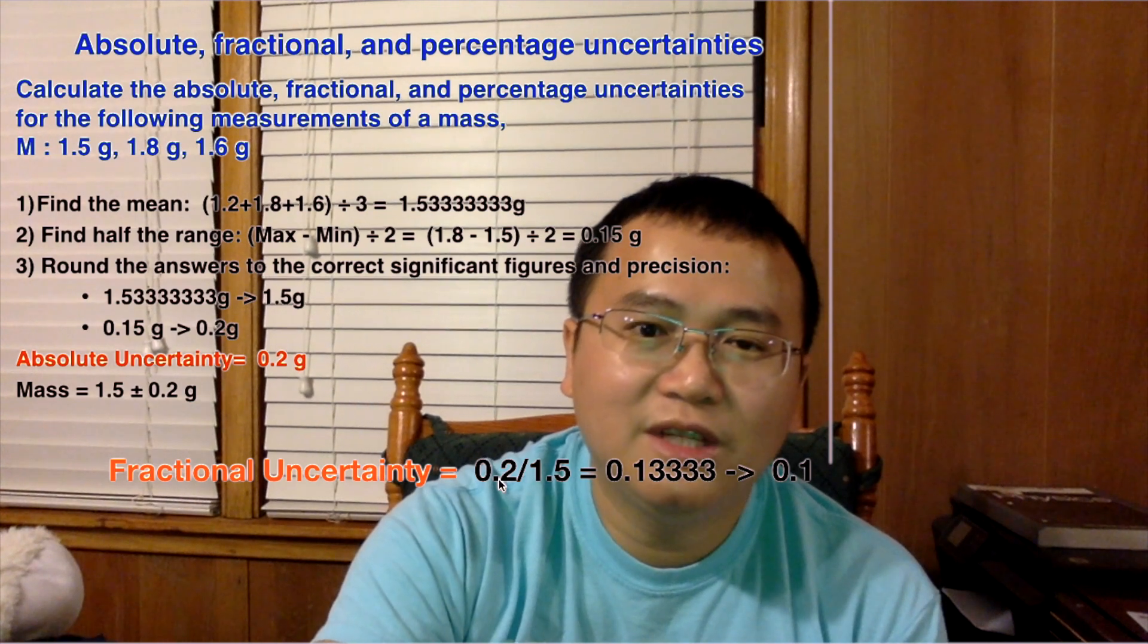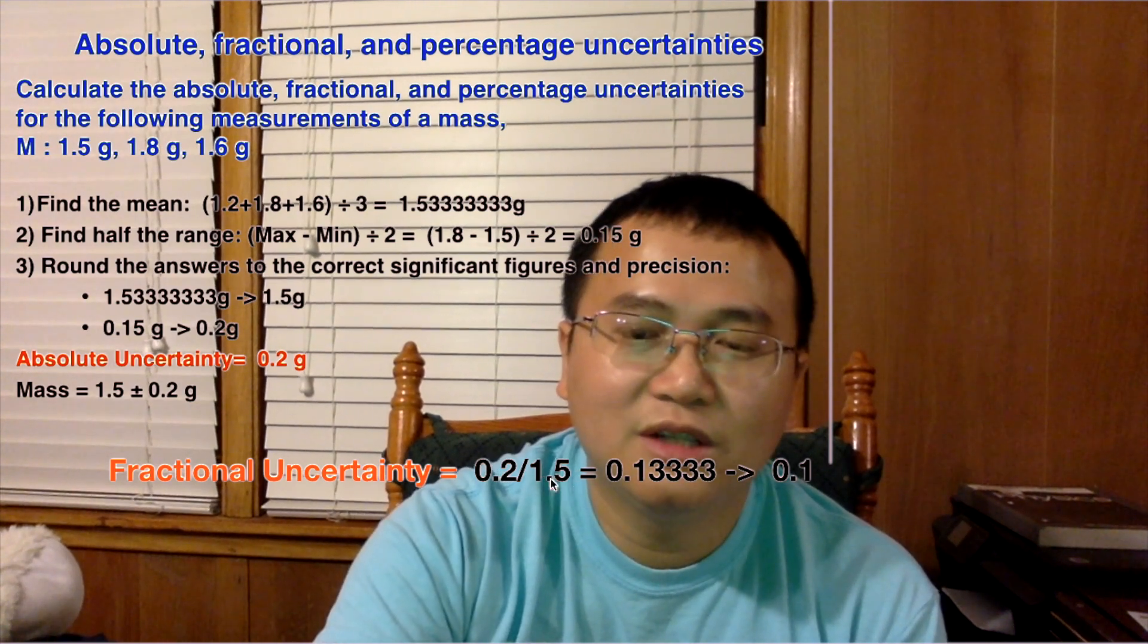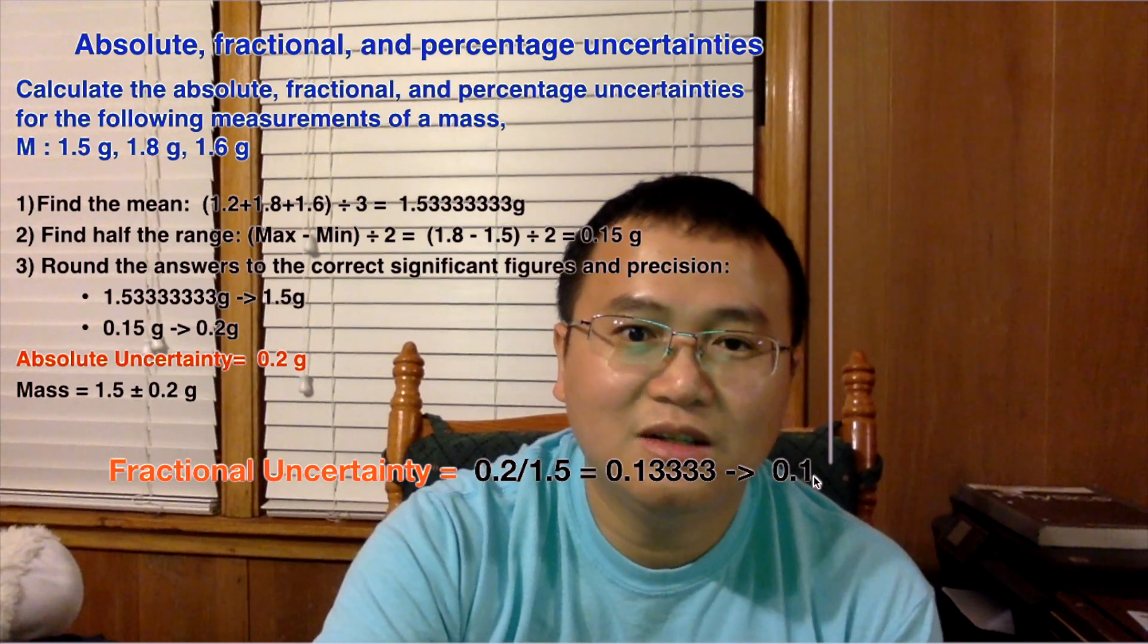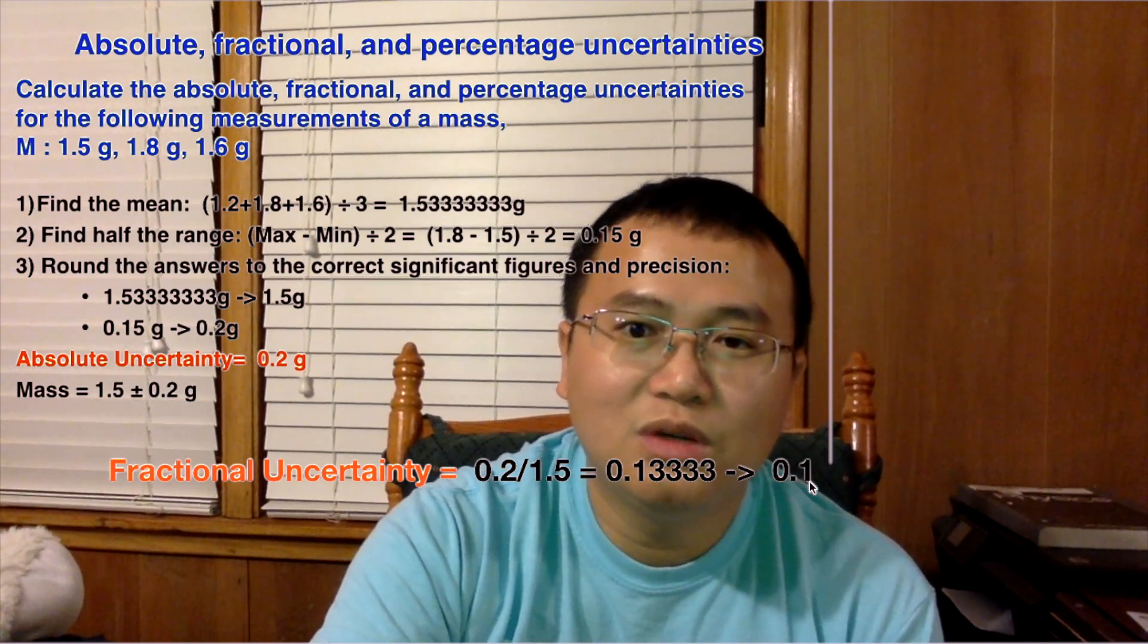So we have one significant figure here divided by two significant figures, so the maximum we should get is one significant figure as the answer, so I round this down to 0.1.